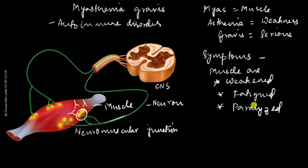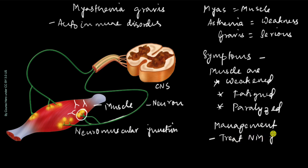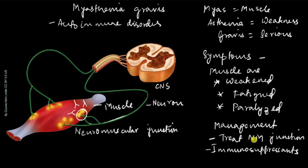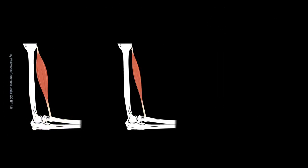It's not as serious as it sounds because it can be managed. There is no cure for this disease, but there are certain medications which improve the transferring of the signal between the neuron and the muscle. There are also some medicines which reduce the immunity — they are immunosuppressants. So management involves treating the neuromuscular junction and using immunosuppressants, making sure the person is able to manage regular movements.